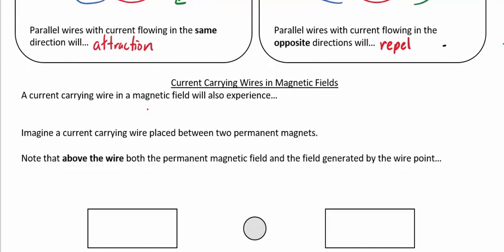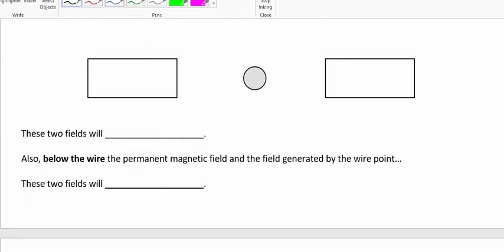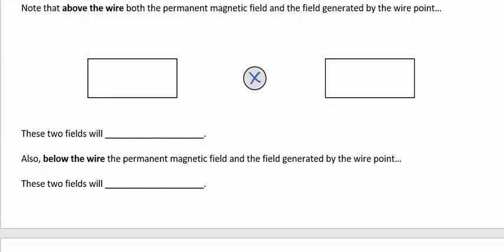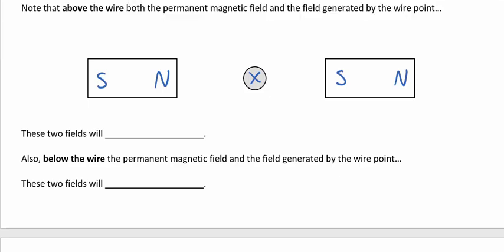Let's take that a step further and look at what's going to happen if we have permanent magnets interacting with currents through a wire. A current-carrying wire in a magnetic field will also experience a magnetic force. Imagine we've got a wire placed between two permanent magnets — the wire is carrying current into the page, with the north pole on one side and the south pole on the other. Put your thumb into the page and note that the magnetic field surrounds this wire in a clockwise fashion.